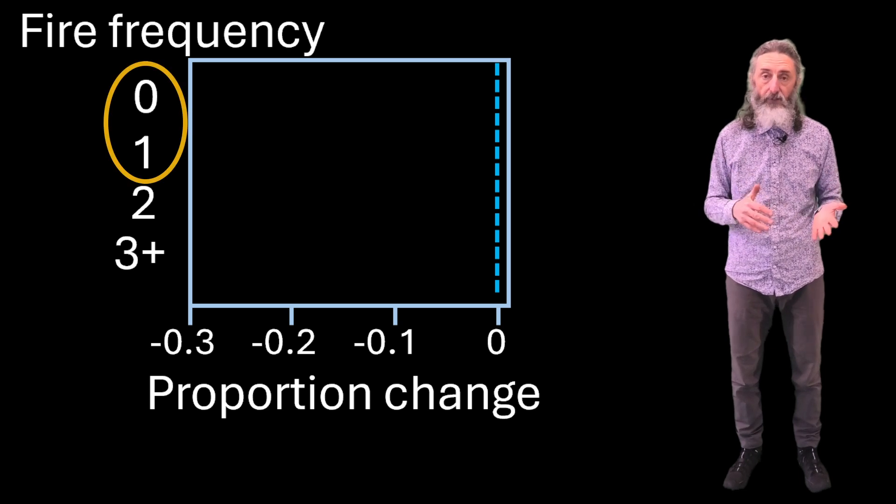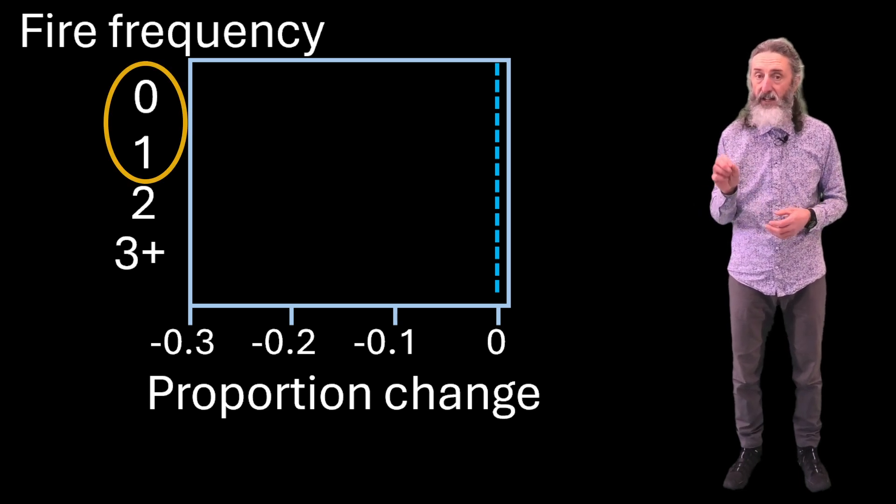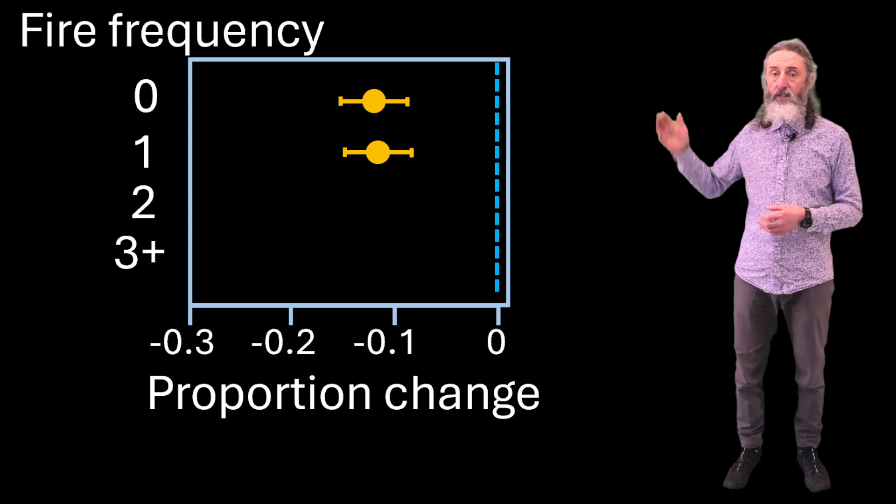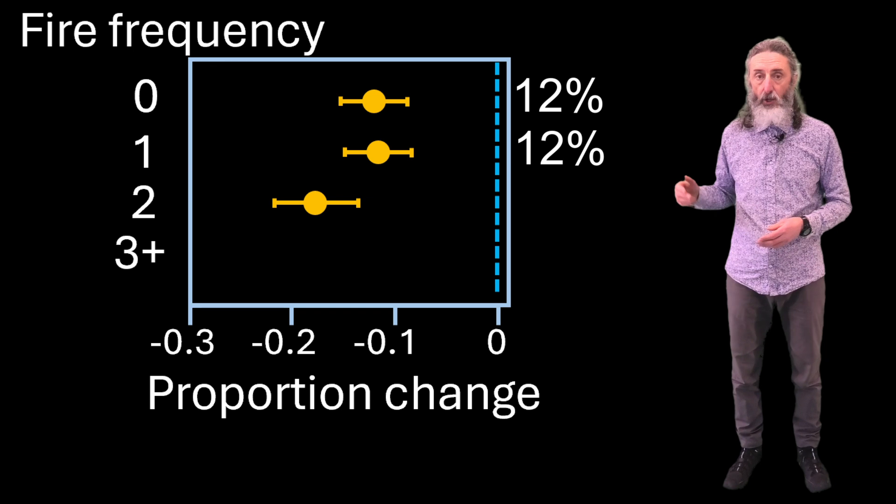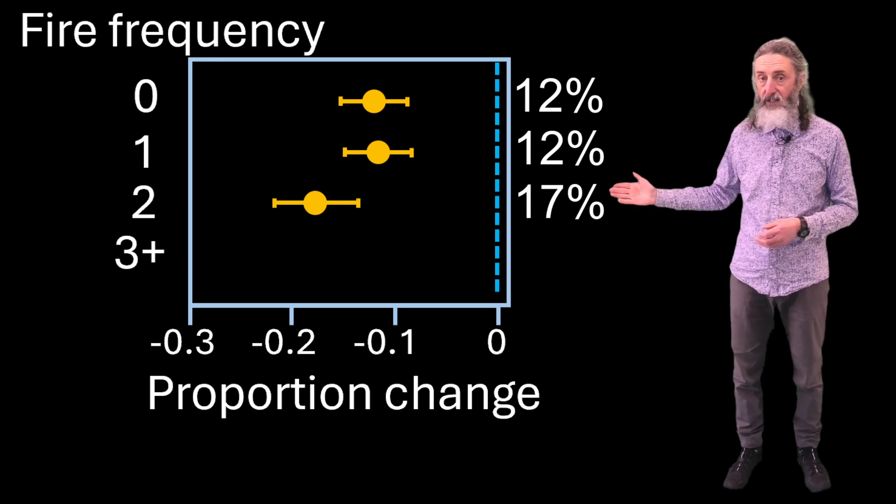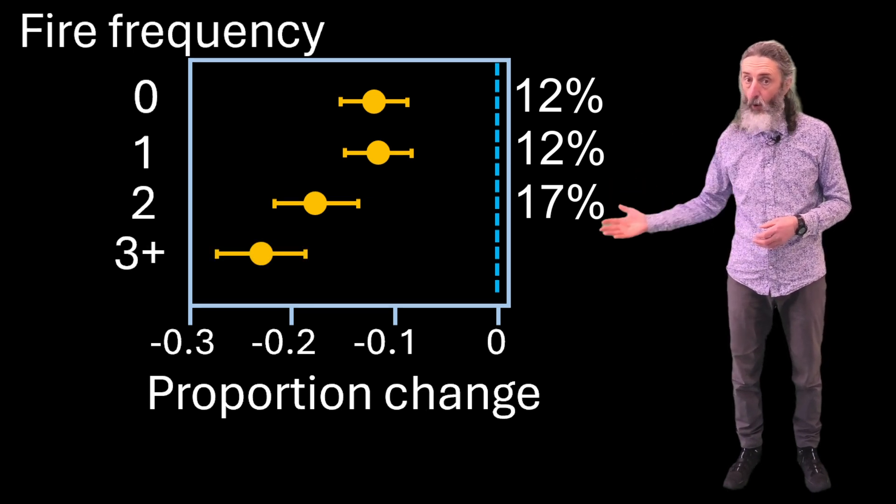If there had been one or no fires in the 40 years before the 2019-20 fires, species abundance or occurrence dropped by 12% on average. But if there had been two fires, plants and animals declined by 17%, and if there were three or more previous fires, they declined by an average of 23%.